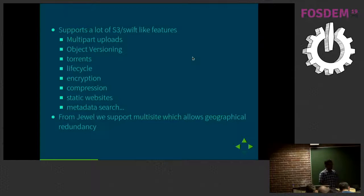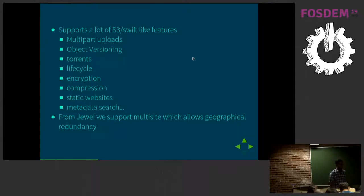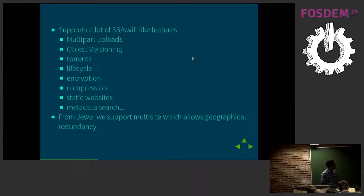There are a lot of S3-like features supported: multi-part uploads, object versioning, torrents, and you can lifecycle objects. There's support for encryption, compression, and static websites. From Luminous, you have support for metadata search with Elasticsearch.